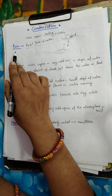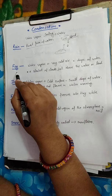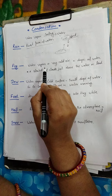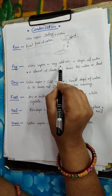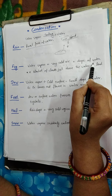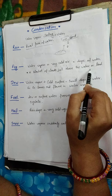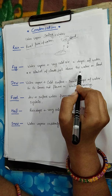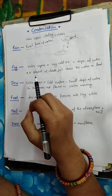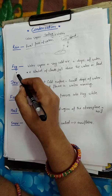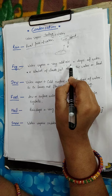The next topic is fog. What is fog? When water vapor mixes with very cold air, it forms a blanket of clouds just above the water or land. In India, we can see fog in the winter season on land and on water. So fog is: water vapor plus very cold air.